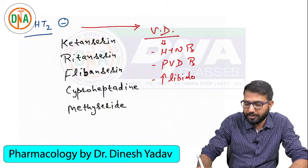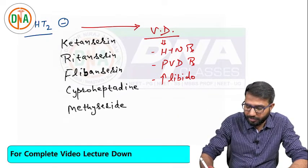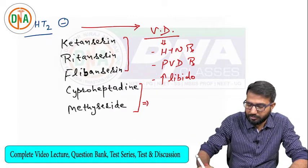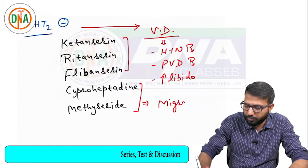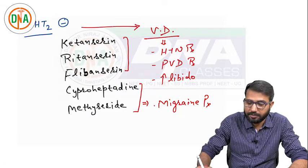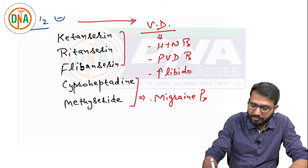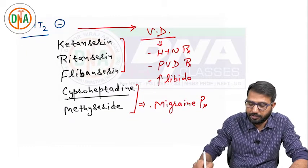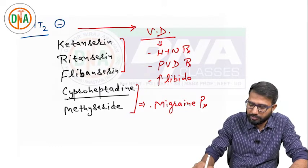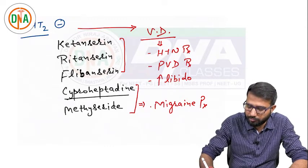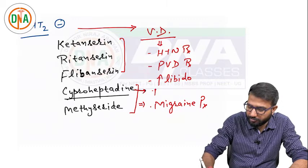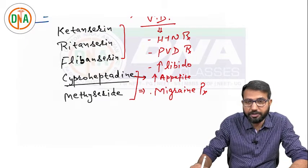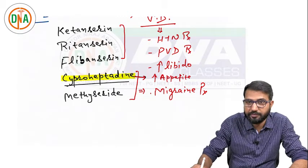So the uses are hypertension, peripheral vascular disease, and increasing libido. Cyproheptadine and methysergide are different — these drugs are especially used for migraine prophylaxis. Cyproheptadine is also an antihistamine drug; it is first-generation, so it also has anticholinergic activity. Importantly, cyproheptadine can be used to increase appetite — a frequently examined point.